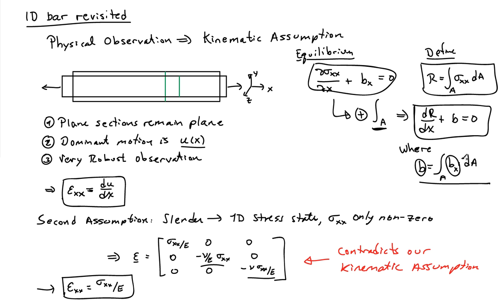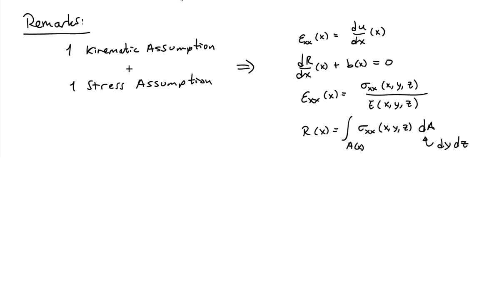What I have in these boxes are the 1D equations we were working with before. You can reduce down to the one-dimensional case typically through a kinematic assumption coupled with some type of stress assumption. This is a very effective way to come to workable theories, so you can solve practical engineering problems relatively easily without dealing with partial differential equations.